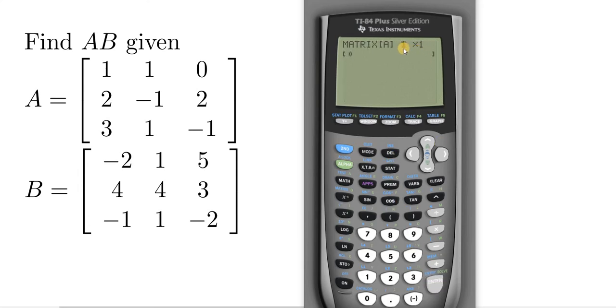So first it wants the dimension, so 1×1 is the default. The first number is the rows, the second number is the columns. So this matrix has 1, 2, 3 rows, and 1, 2, 3 columns. In fact, they both do. So 3, use the arrow key here, so 3, and then you have to hit enter.